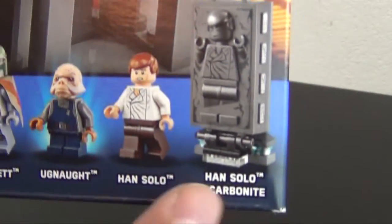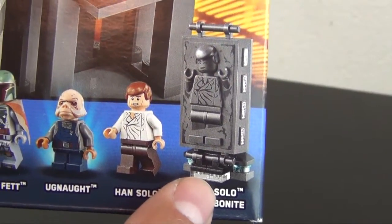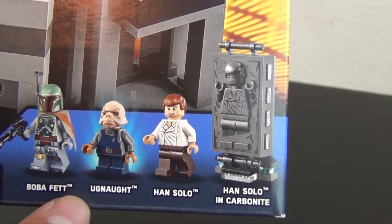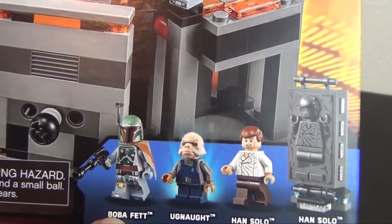Kind of four, because you've got Han Solo in Carbonite, but you have regular Han Solo, Ugnaught, and Boba Fett.